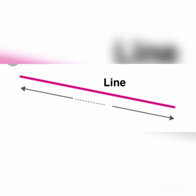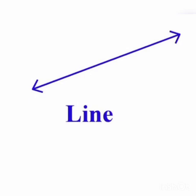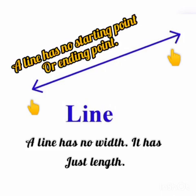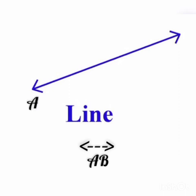Next, let us discuss about a line. A line represents a straight path. A line has no width — it has just length. A line can be extended in both directions. A line has no starting point or ending point; it has a straight path that has no beginning or end. This line is labeled A on the left side and B on the right side.